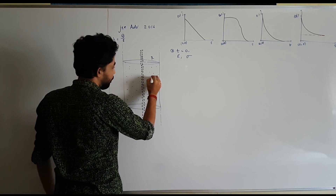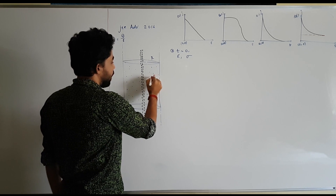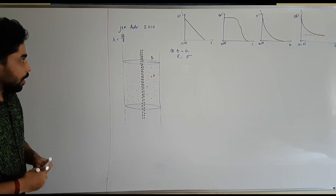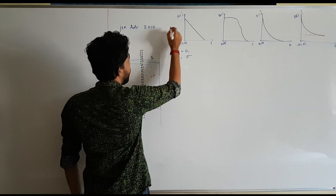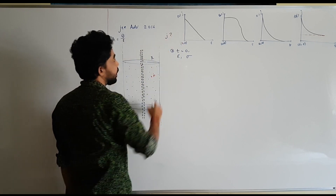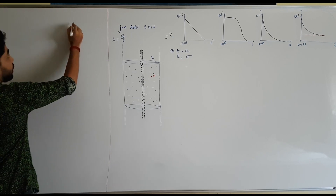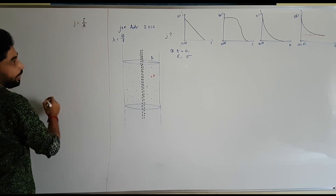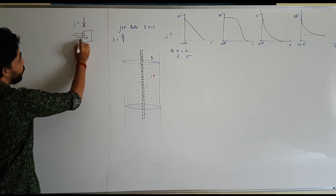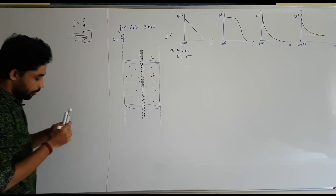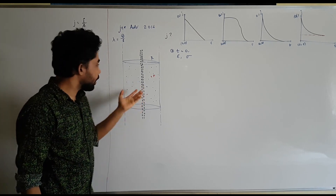Say suppose I am taking point P — what will be the variation of current density at this point? Let's see how to solve it. First of all, we must ask: why is there a variation in current density? If there is current density, that means there should be a current flow. So let's see why there is a current flow.